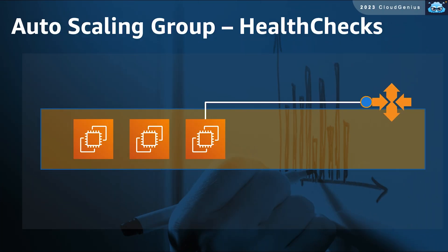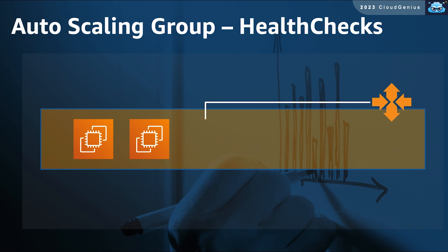You also need to know about an important ASG feature: health checks. ASG frequently sends health checks to every member of the group, who must respond back. If a member fails to respond to a number of these health checks, it will be considered down by the ASG, decommissioned and removed from the group. ASG will then replace it with a new, healthy, fresh instance.